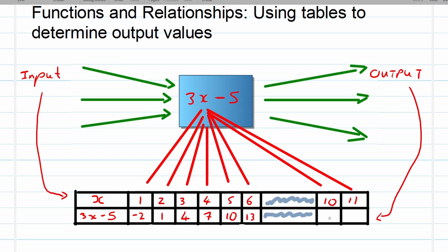Let's work with 10 now. 3 times 10 is 30, 30 minus 5 is equal to 25. Then 11 lastly, 11 times 3 is 33 minus 5 is equal to 28.